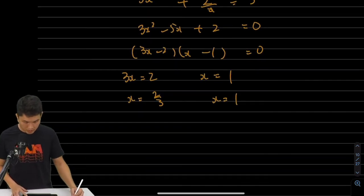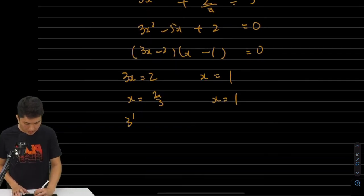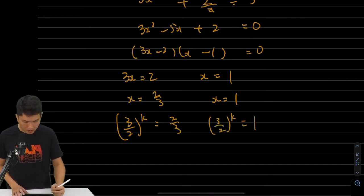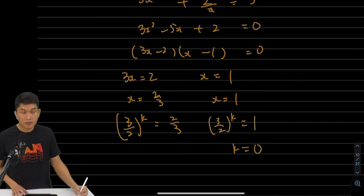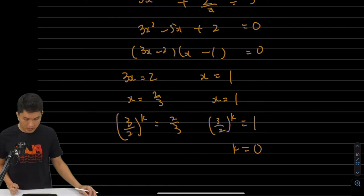Let's substitute back. So we have 3 to the k over 2 to the k. So that's 3 over 2 to the power of k, equals to 2 over 3. Or 3 over 2 to the power of k equals to 1. Now, for the right-hand side, it's easy. k must be equal to 0. For anything raised to the power of something equals to 1, then k should be 0.